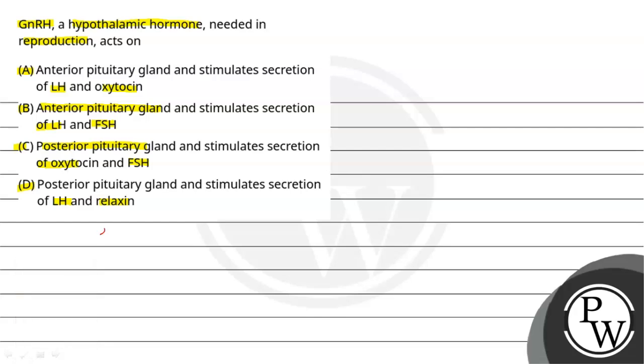So, let's read our concept here. That is GnRH, gonadotropin releasing hormone. This is the gonadotropin releasing hormone that is secreted by the hypothalamus.